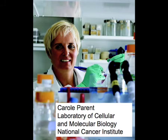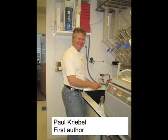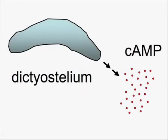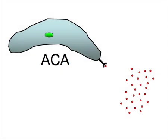Carol Perron at the National Cancer Institute in Bethesda and her colleagues have been trying to figure out just that. They already had some ideas. They knew, for example, that cyclic AMP is the chemoattractant. They also knew that when individual Dictyostelium cells received the cyclic AMP signal, they ramped up production of an enzyme called adenylyl cyclase, or ACA.